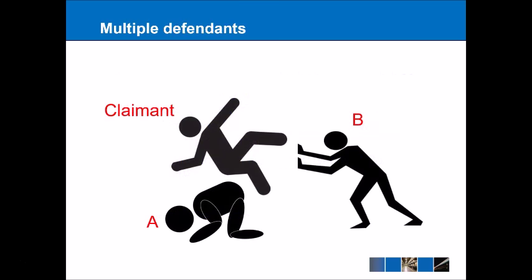On a similar note with multiple causes, another issue is multiple defendants. The classic prank of pushing someone over someone's crouched back is an example of where there may be multiple defendants. This is problematic in terms of establishing causation, and the question is what would happen with a strict application of the but-for test.